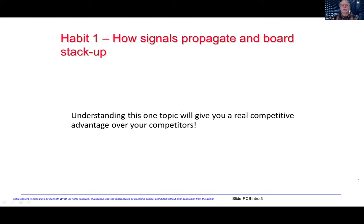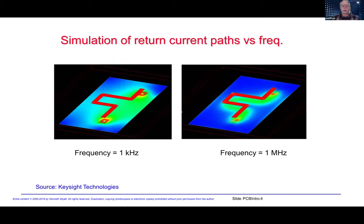Understanding how circuits or how signals propagate will give you a real competitive advantage over your competitors. EMC design is all about currents and where currents are flowing. As a digital designer, you're more interested in voltage levels — highs and lows. But for good EMC design, you really want to consider currents and how they flow, because if we interrupt that flow of current, you're going to end up with EMC issues.